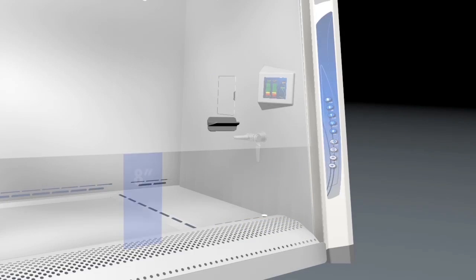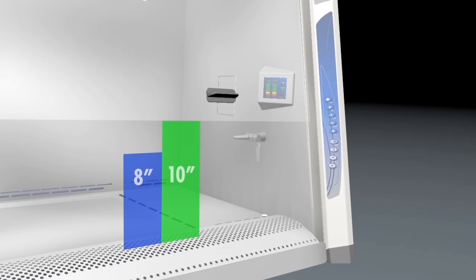The Axiom also allows the lab to select from two operational sash heights. This setting can be changed when needed through the MyLogic operating system. No physical alterations are required.